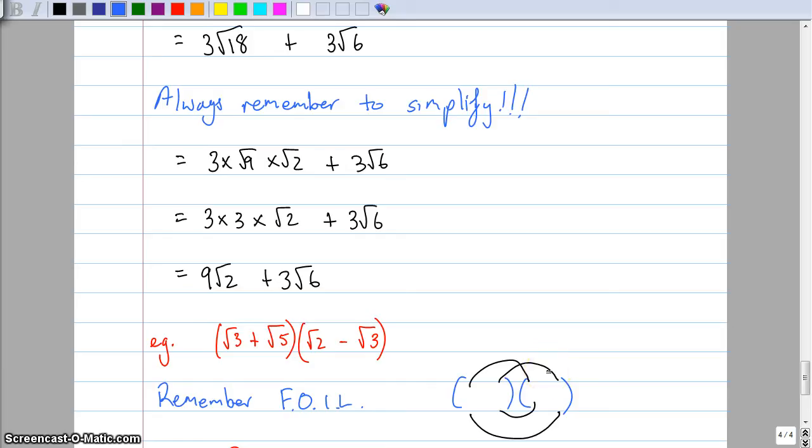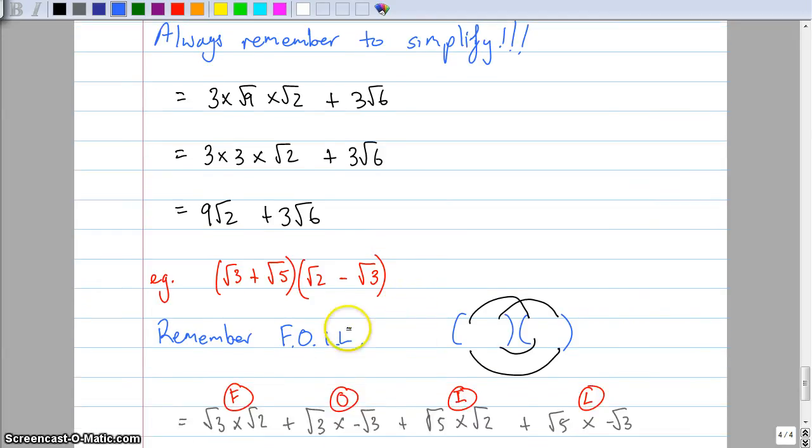But it really doesn't matter which way you do it. As long as you keep the minuses attached to the root three and the positive attached to the root five, and as long as you've got all the terms, it really doesn't matter which way you do it. I'm going to do it that way just because that's the way I've mentioned it before. So I do my first multiplied together, so root three multiplied by root two.